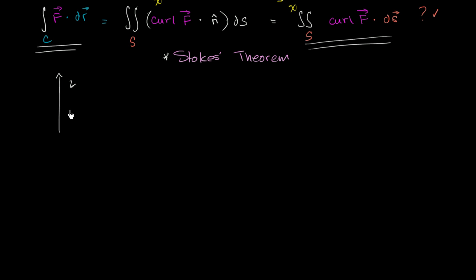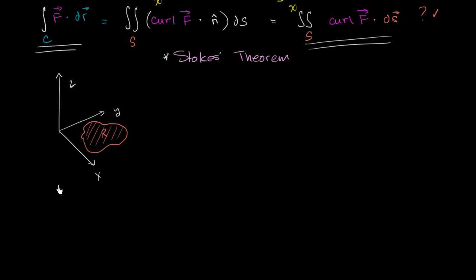Let me draw my axes. So that's my z-axis, that is my x-axis, and then that is my y-axis. Now let's imagine a region in the xy-plane. So let's say this is my region in the xy-plane. I will call that region R. And I also have a boundary of that region. Let's say we care about the direction that we traverse the boundary — we're going to traverse it in a counterclockwise direction. We can call that path C.